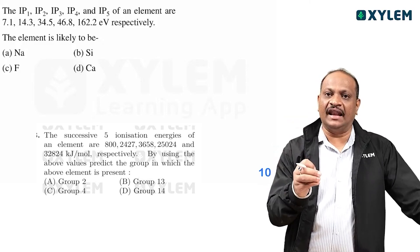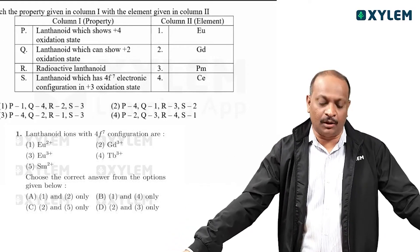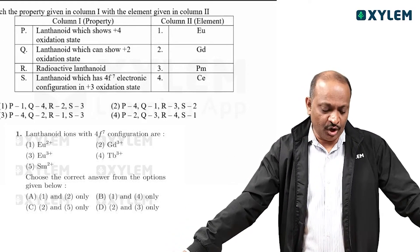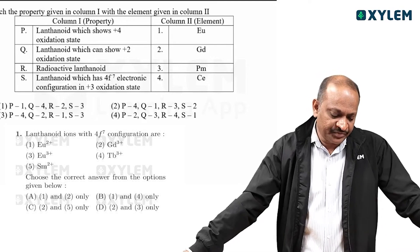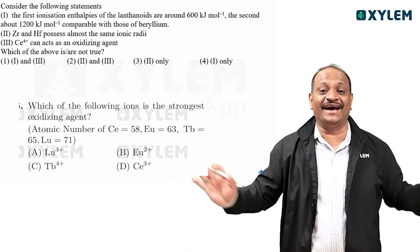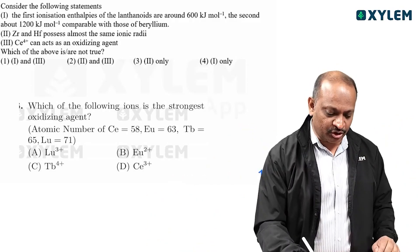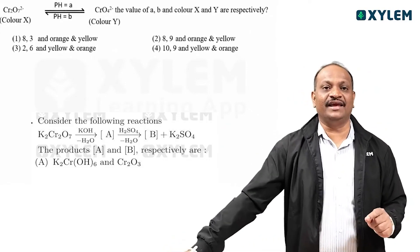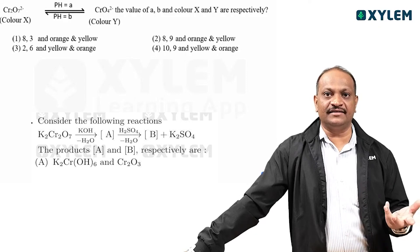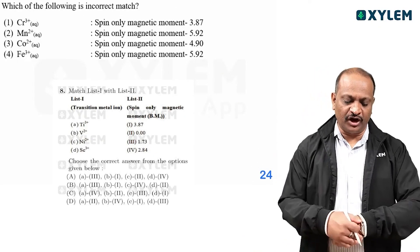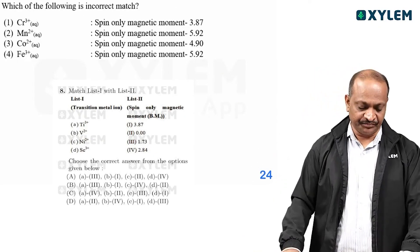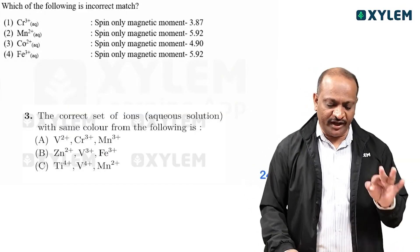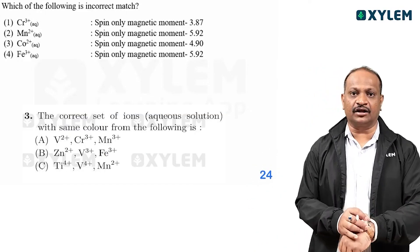The number of valence electrons — match the property given in column 1 with the element given in column 2. Now, let's match it. We have a question that we discussed in the first case: which of the following is an incorrect match?